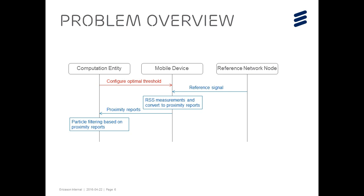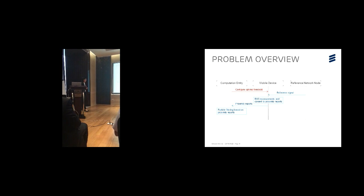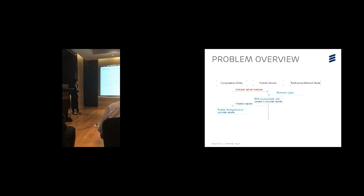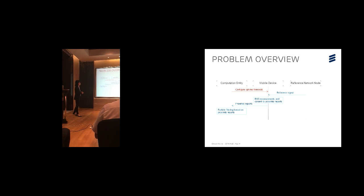So, in order to get the position of a moving device, we assume that there are three components in the network. For instance, we assume there is a computation entity which is equipped with some storage and some computation ability. And also, we assume that there is one mobile device which will be used to collect the measurements. And also, there are several reference network nodes from which the mobile device can measure the reference signal.